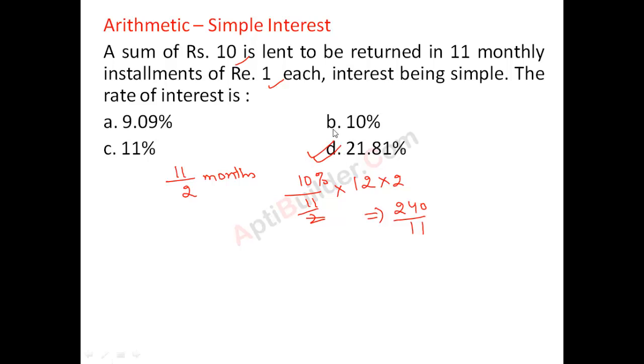Or otherwise you can put it in formula that my interest is 1 rupee and the principal is 10, rate I need to calculate, time is 11 by 2 months.